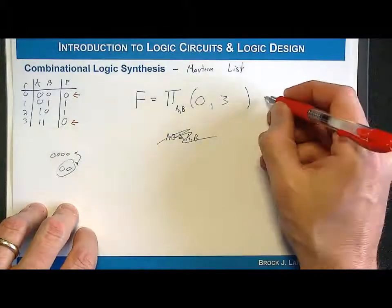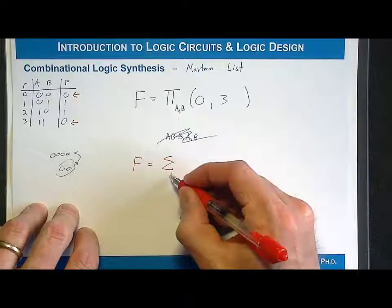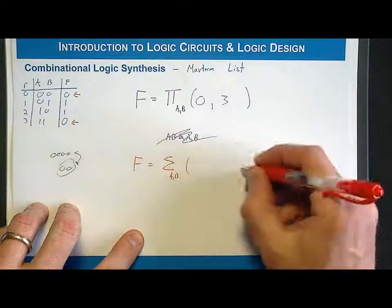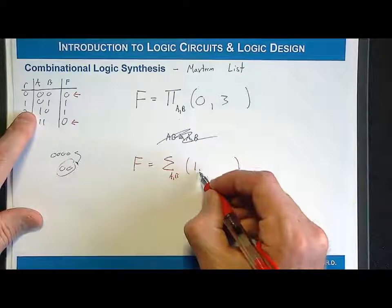So if I came along and I said F is equal to a min-term list using capital sigma, I comma delimit the input variables as a subscript. In this situation, I would then list the row numbers corresponding to an output of 1. So I would have this.